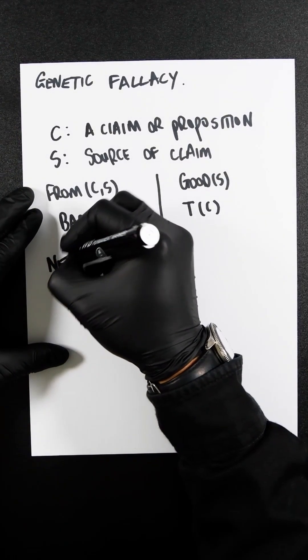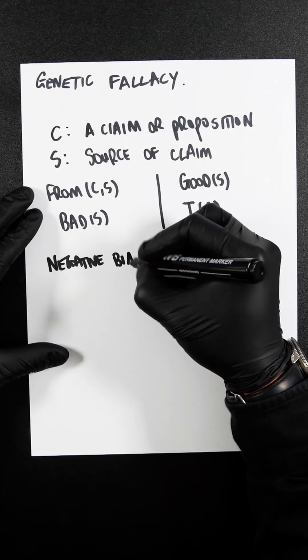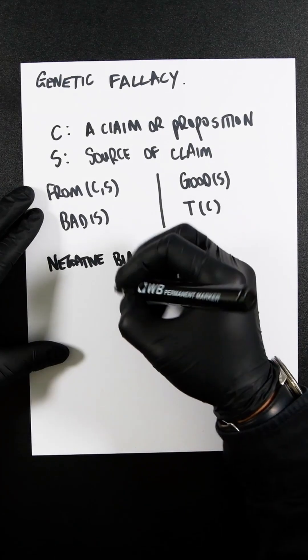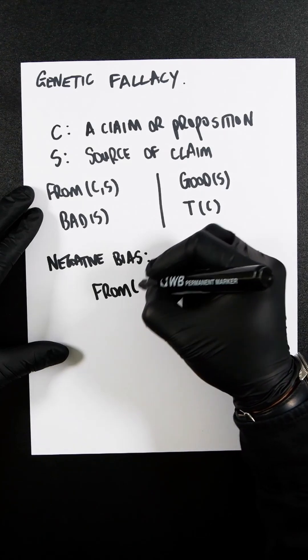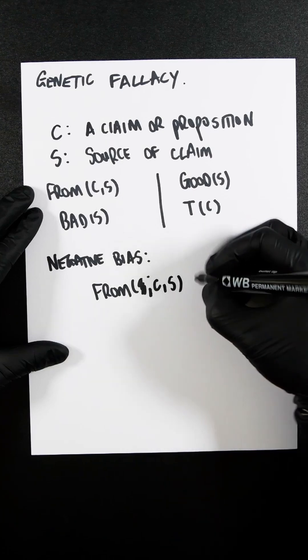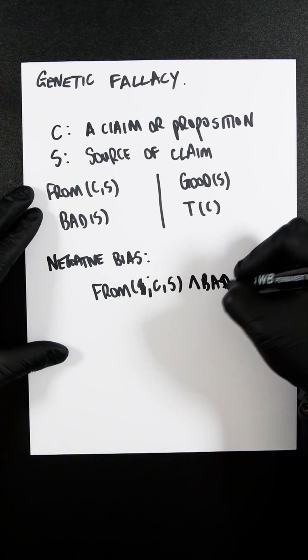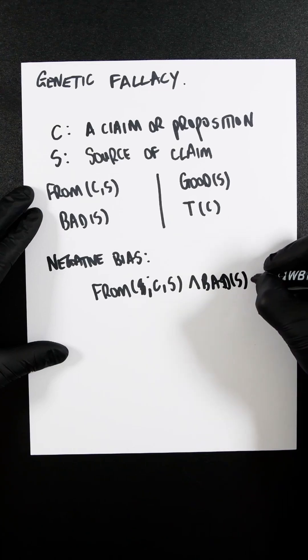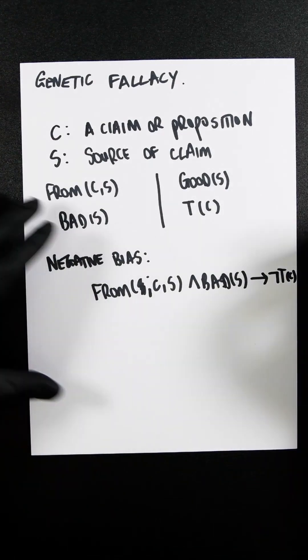So let's say we have a negative bias. We can write that as from CS and bad S if then not TC. So a bad source must be false.